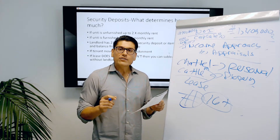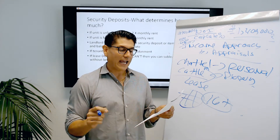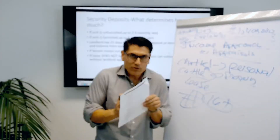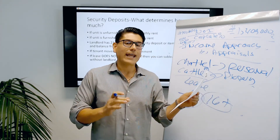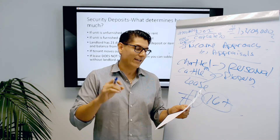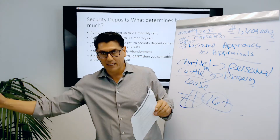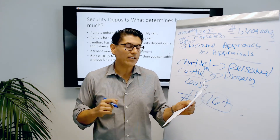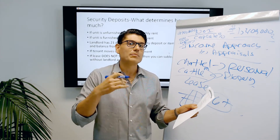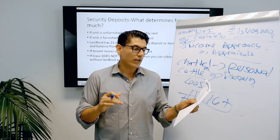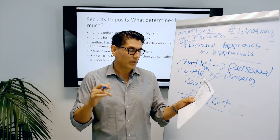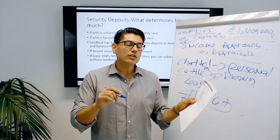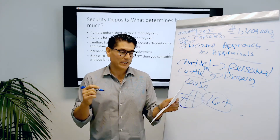Number nine: the holder of a lease that subleases the property is said to have what? If you have a lease and rent out part to someone else, you take their money, combine it with yours, and give it to the landlord — that's called a sandwich lease. Answer alpha, a sandwich lease. Number ten: an estate at sufferance — a tenant wrongfully remains in possession after the end of the term. The landlord must file an unlawful detainer action, or UD — answer Charlie.